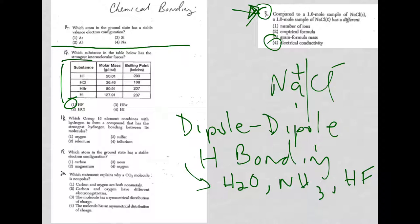Question 18, which group 16 element combines with hydrogen to form a compound that has the strongest hydrogen bonding between its molecules? Again, hydrogen bonding. It's hydrogen bonding with oxygen, hydrogen bonding with nitrogen, or hydrogen bonding with fluorine, and there it is. Choice one.